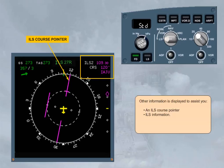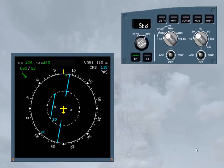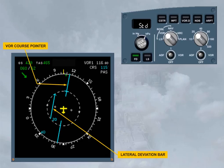Select ROSE VOR mode. The ROSE VOR mode is another raw data display. On the display, there is now a course pointer and a lateral deviation bar for the VOR — in this case, VOR1. To have this display, a course must have been selected on the MCDU RadNav page. Like ROSE ILS, the information about the tuned frequency, the selected course, and which nav aid — here PA — is displayed in the top right hand corner. Also, the MCDU selected approach type, VOR or GPS, is displayed as shown.